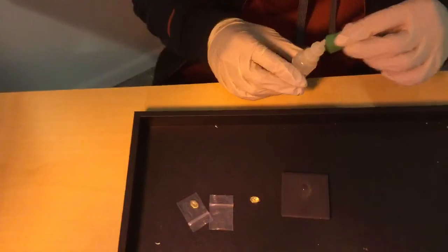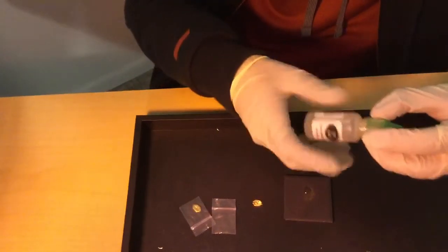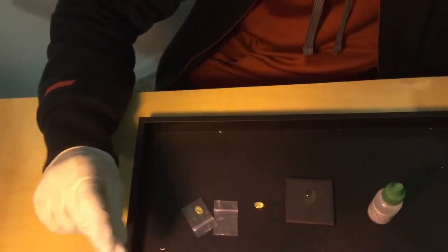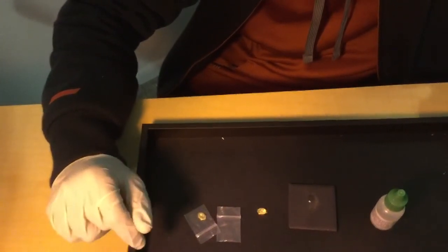If the scratch dissolves slowly and leaves rusty colored particles, it is probably 12k gold. If the solution leaves the scratch intact, it means the object being tested is 14k or greater.